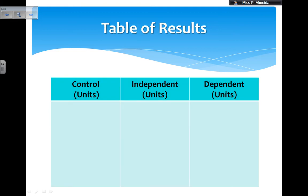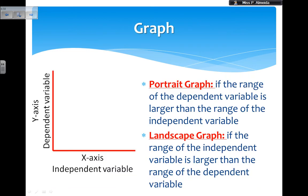When you get your table of results, the control variable doesn't really have a place there, but the independent variable should always come before the dependent variable. When doing the table, ensure you write the units for the things you're measuring. You should also take into consideration decimal places and number of significant figures.